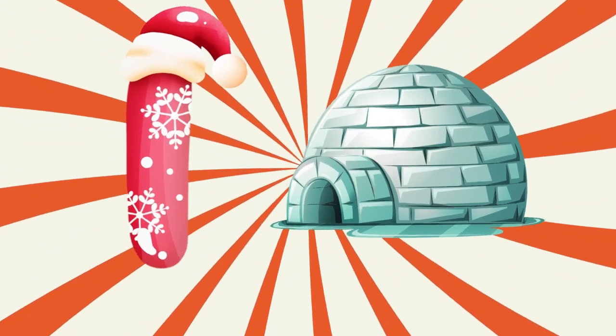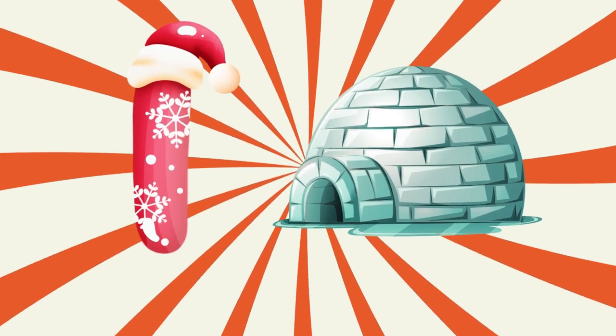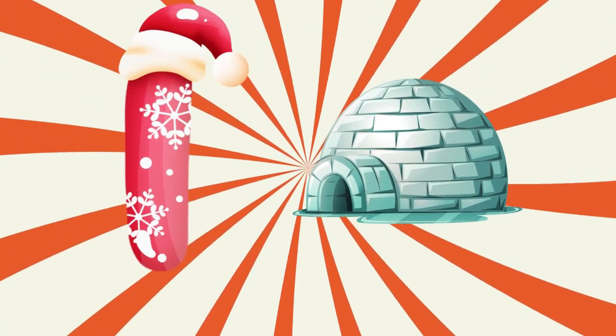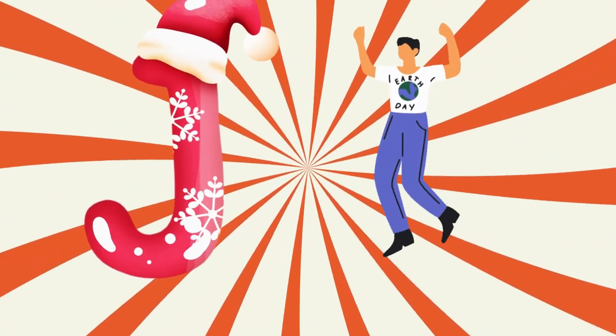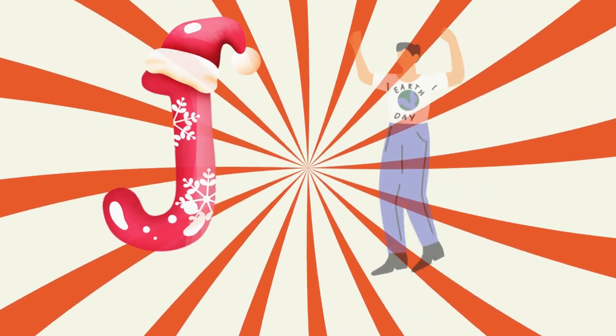I is for igloo, i-i-igloo. J is for jump, j-j-jump.